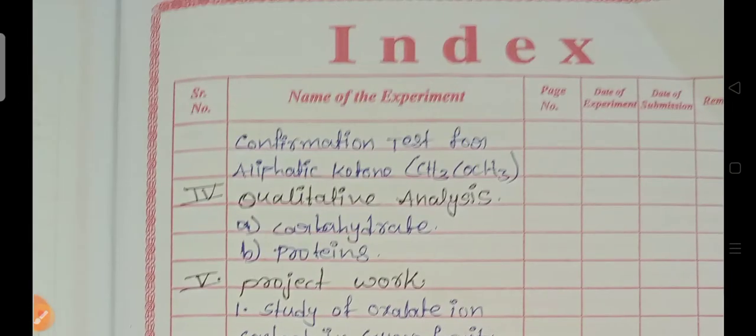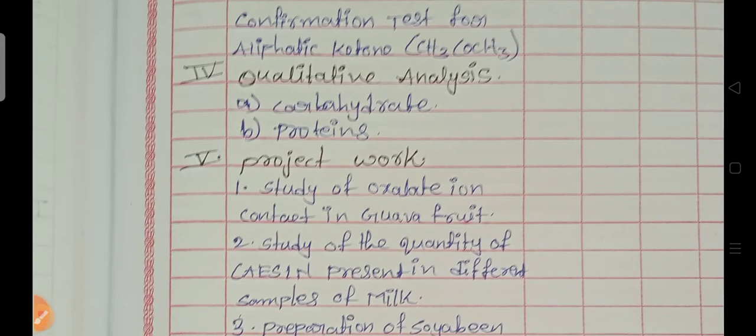So next coming to the continuation of the index, confirmation test for the aliphatic keto. Fourth one is qualitative analysis, carbohydrate and proteins.